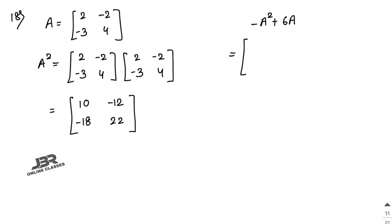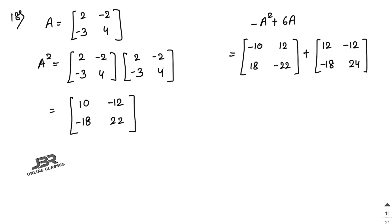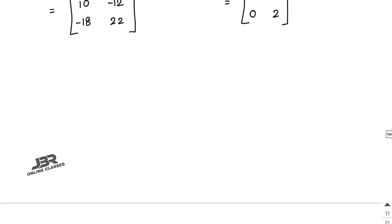Now −A² = [−10, 12; 18, −22]. And 6A = [12, −12; −18, 24]. Adding: −10+12=2, 12+(−12)=0, 18+(−18)=0, −22+24=2. So −A² + 6A = [2, 0; 0, 2].